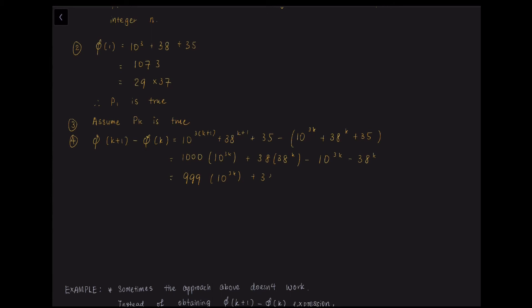Alright, so we can then immediately see that there are 1000 times 10 to the power of 3K and we need to minus 1 of it. So what we are left with is 999 times 10 to the power of 3K. And similarly for 38K, there are 38 of them. So you minus 1, you are left with 37.